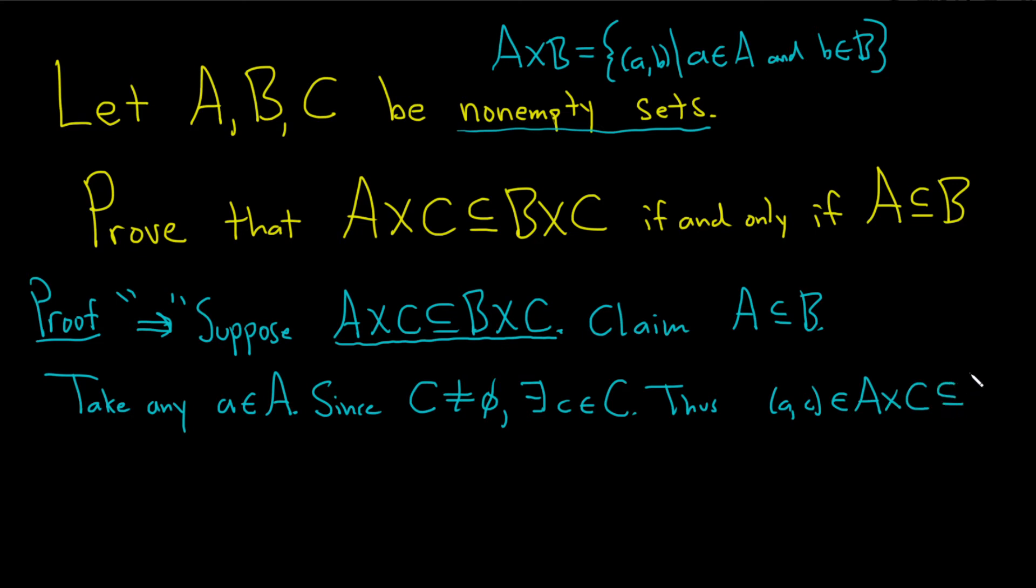But this is a subset of B cross C by assumption. So this means that A comma C, well if it's a subset every element in A cross C is also in B cross C. Well A C is here so in particular this one is also in B cross C. And what does this mean?